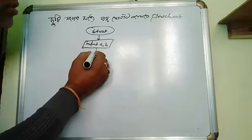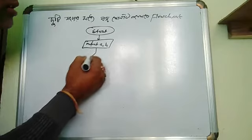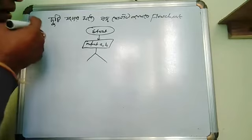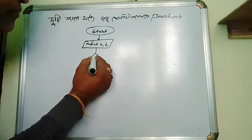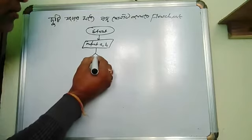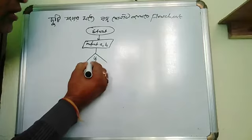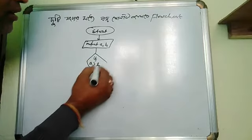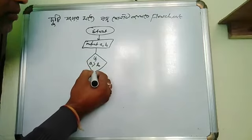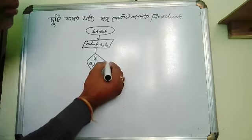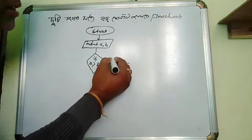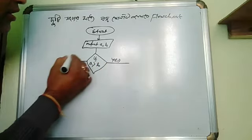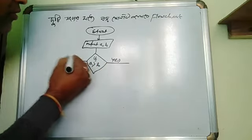This is the decision-making box. If A greater than B — this is the yes, this is the no.